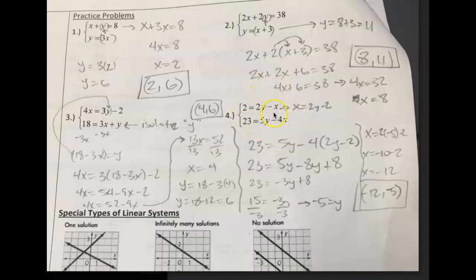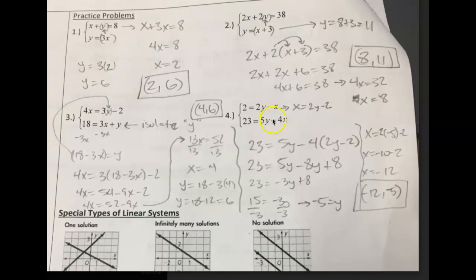On this next problem, I got x by itself: I added x to both sides and then subtracted 2 on both sides to get x equals 2y minus 2. Now that I know x equals 2y minus 2, I substitute 2y minus 2 in for x into the bottom equation. I went ahead and solved it and got y equals negative 5. Then I plugged y into the equation x equals 2y minus 2, figured out x is negative 12. My final answer is x comma y: negative 12, negative 5. To check, using the bottom equation: 5 times negative 5 is negative 25, negative 4 times negative 12 is positive 48, and negative 25 plus 48 is 23. That's a bit of practice on solving a system by substitution.